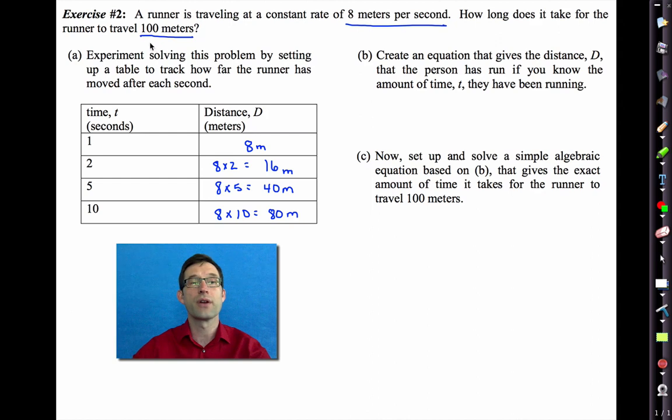Now, by the way, we're trying to figure out how long it takes for the runner to travel 100 meters. And clearly what we know is it takes more than 10 seconds. Now, here's where the tools of algebra start getting used. Letter B asks us to create an equation that gives the distance, big D, that the person has run, if you know the amount of time, T, they have been running. What we always want to do when we create an equation like this is we want to take the data that we've already come up with, the pattern that we've already established.